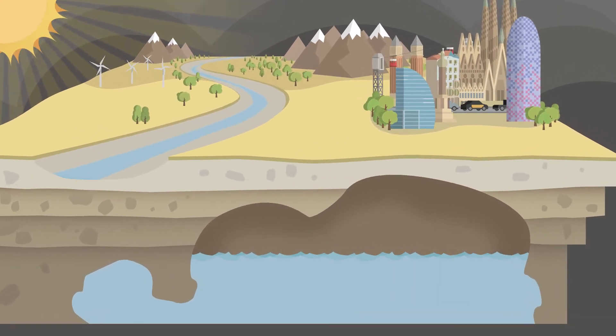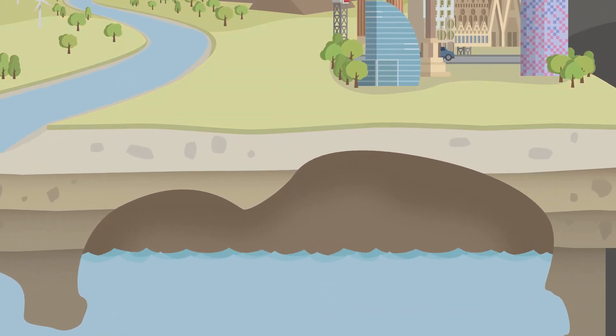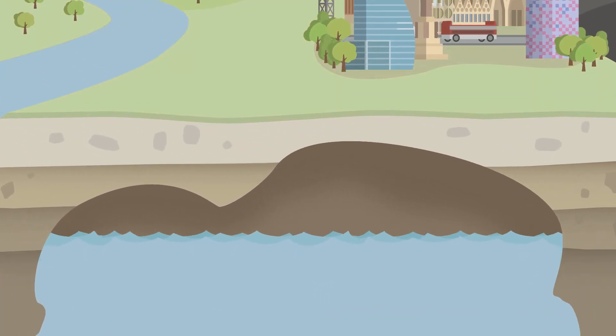The groundwater body, also called aquifer, of the Barcelona Delta is a key resource to deal with this problem. It has a capacity that is similar to that of a reservoir.